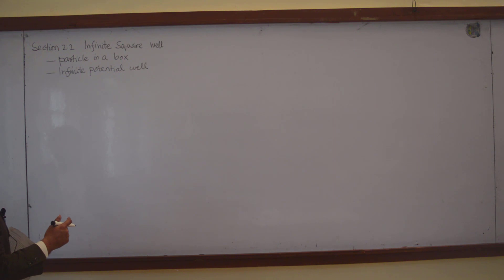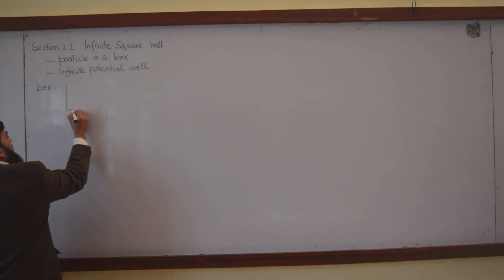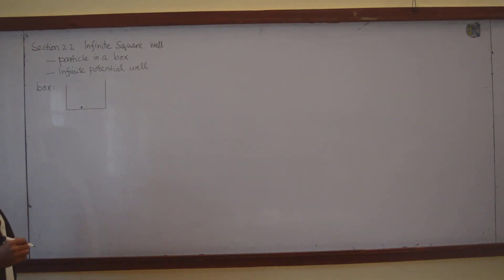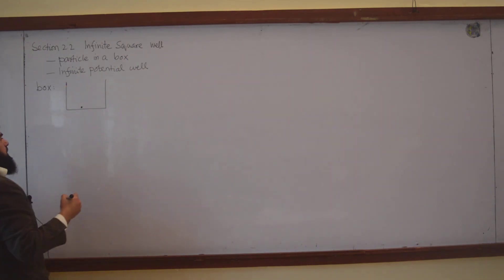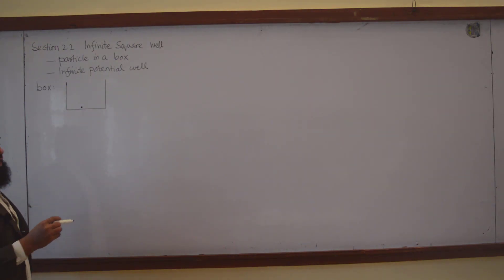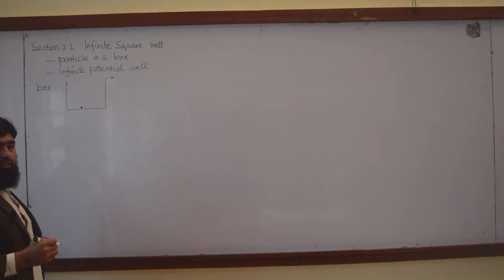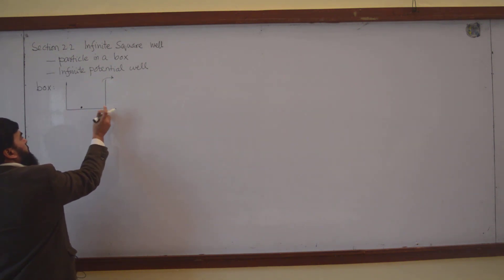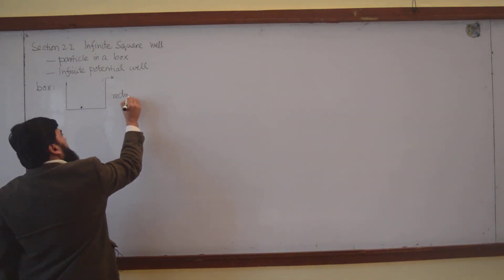First, let's assume there is a box and inside the box we have a particle. We are not restricting ourselves to some specific particle — this is any particle. This particle is inside the box and is not able to move out of the box. At any point you can find this particle; it may be here or here, there is no restriction on where this particle will be.